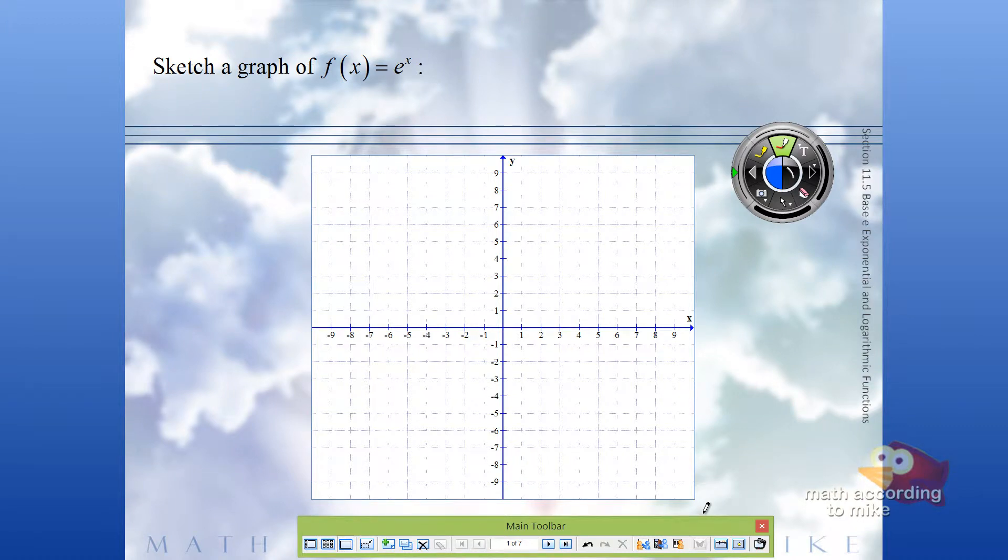Let's sketch a graph of e to the x, and we'll continue this on the next slide. Remember, e to the x is an exponential function, which means it automatically goes through two points when it's not being transformed. Those two points are 0,1 and 1,e.